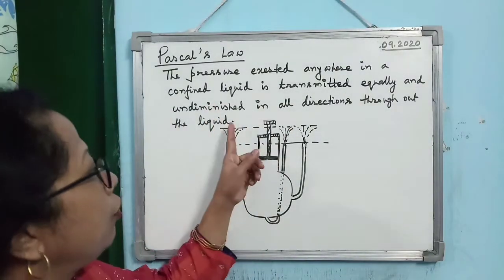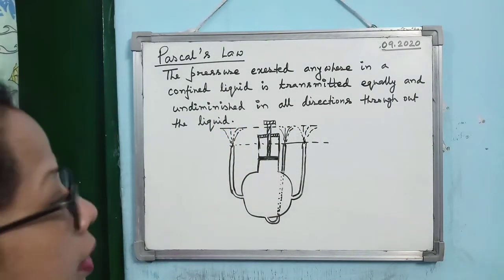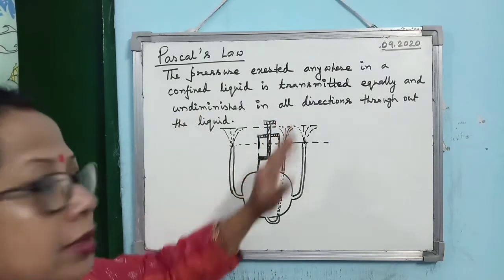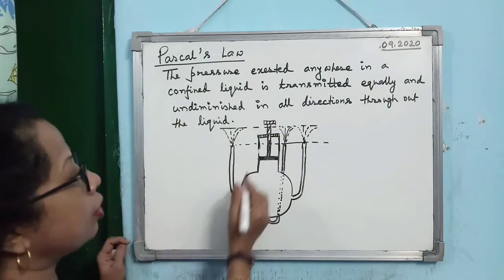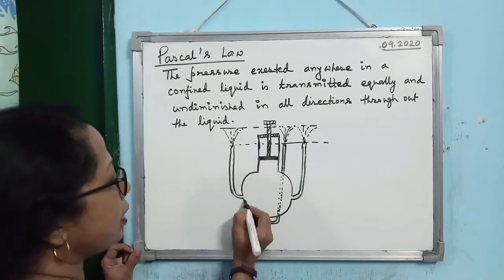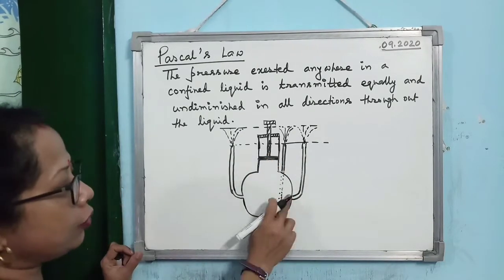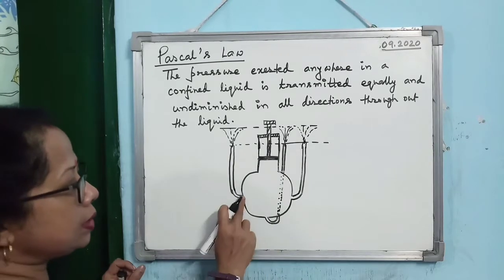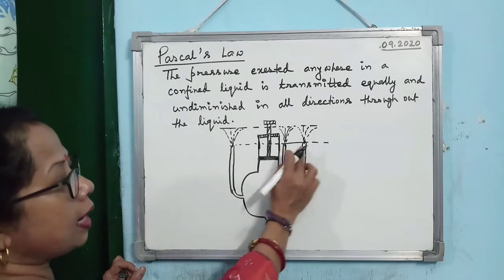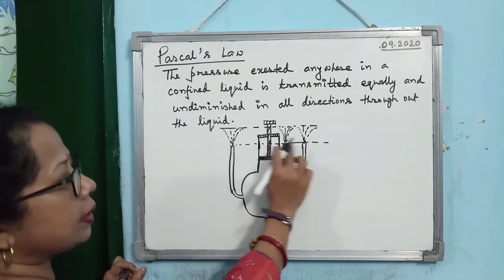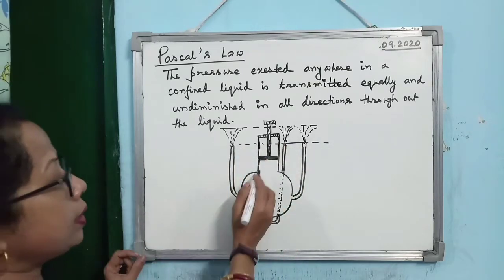To understand the statement of Pascal's Law, take a container with three outlets at three different positions. All three outlets are at the same height.